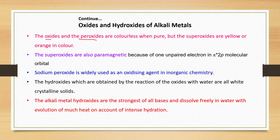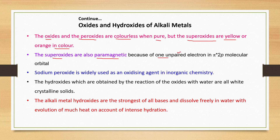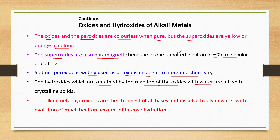The oxides and peroxides are colorless when pure, but the superoxides are yellow or orange in color. The superoxides are also paramagnetic because of one unpaired electron in the π anti-bonding 2p molecular orbital. Sodium peroxide is widely used as an oxidizing agent in inorganic chemistry.